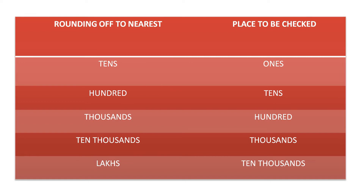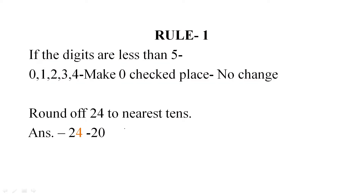If you are rounding off to nearest 10s, you will check the place of 1s. If you are doing rounding off to nearest 100s, you will check the place of 10s. If you are doing rounding off to the nearest 1000s, then you will check the place of 100s. Similarly, the general rule for estimating is to look at the digit to the right of the digit you want to estimate. Now I am going to tell you two rules for estimation.